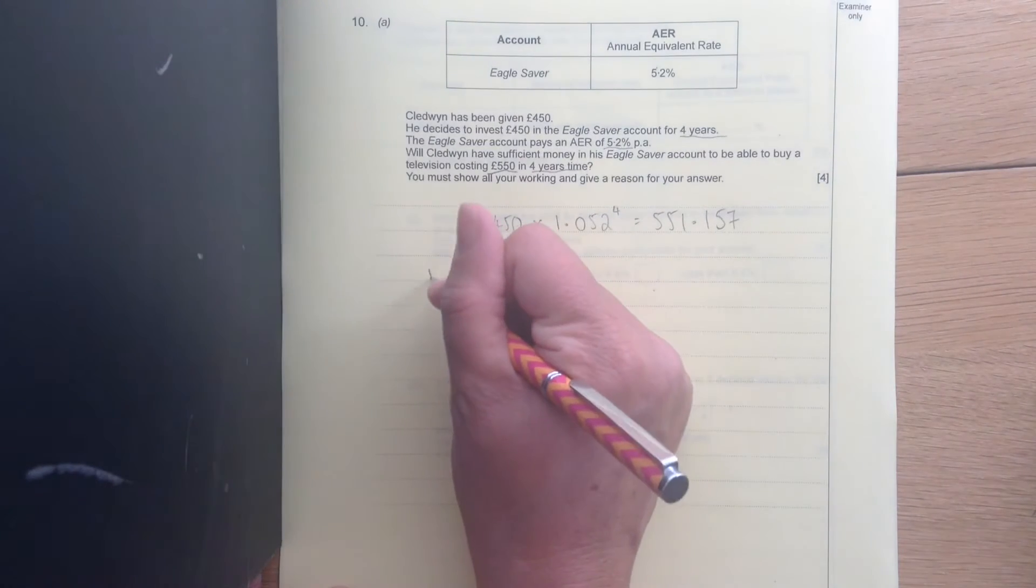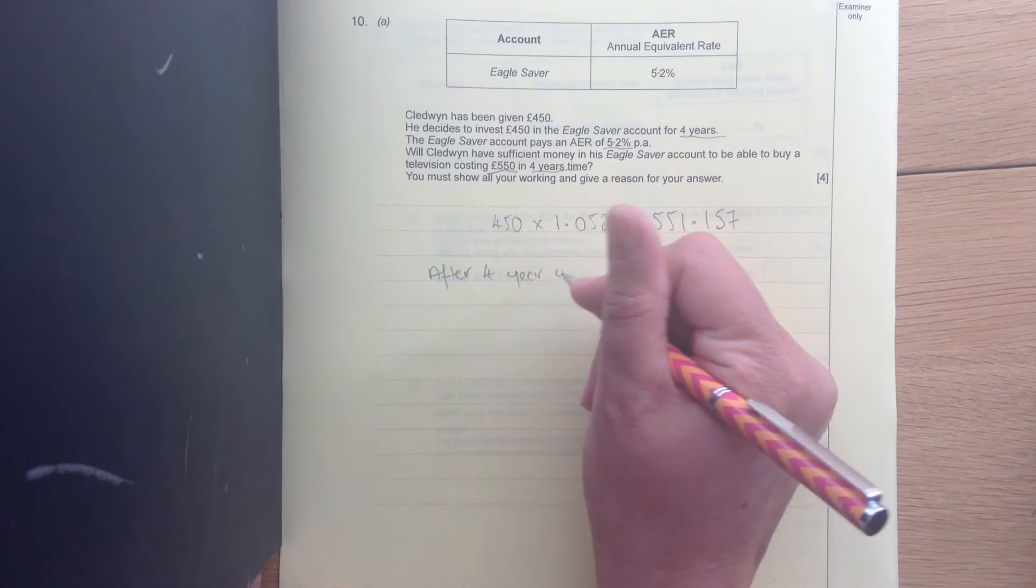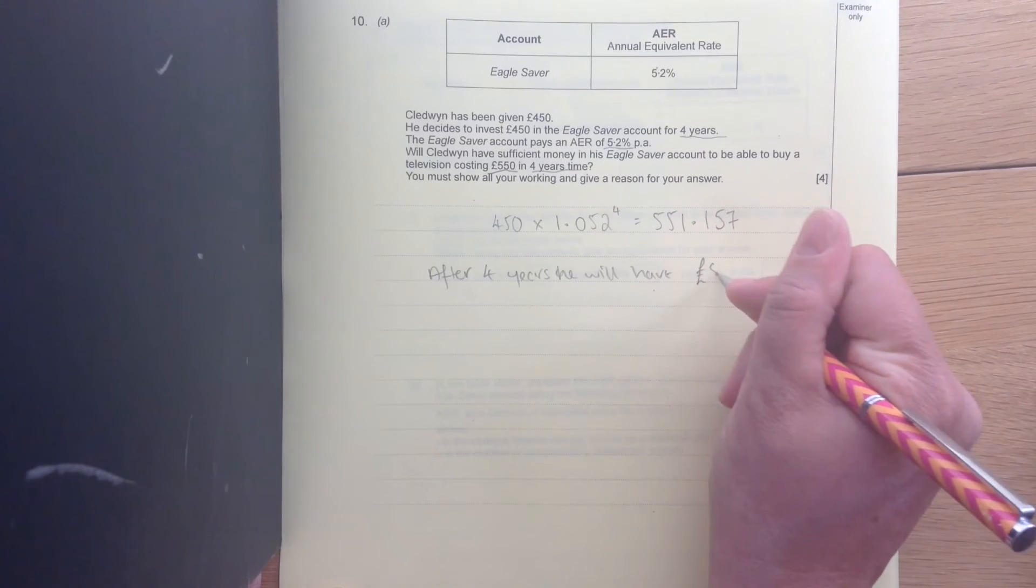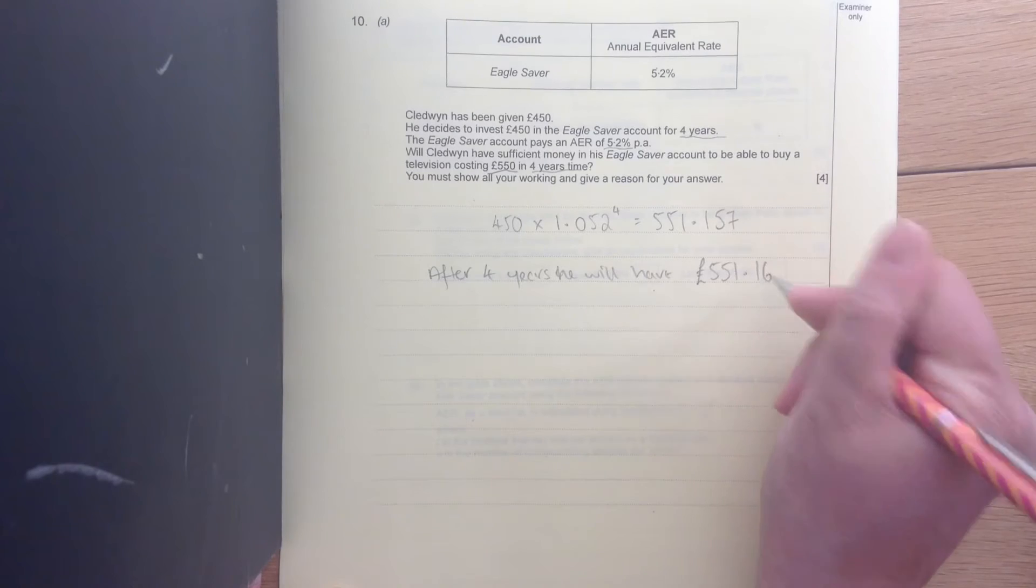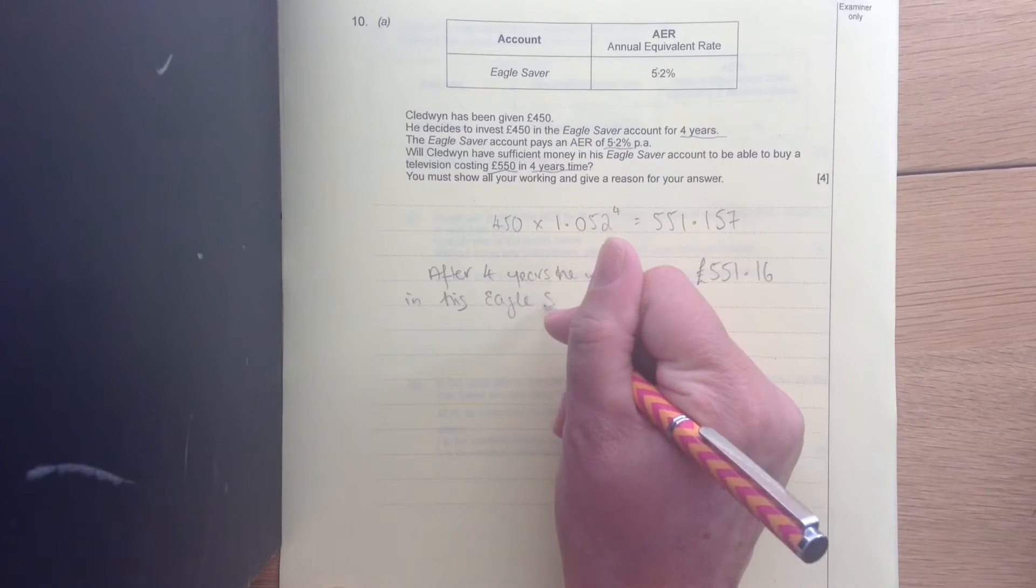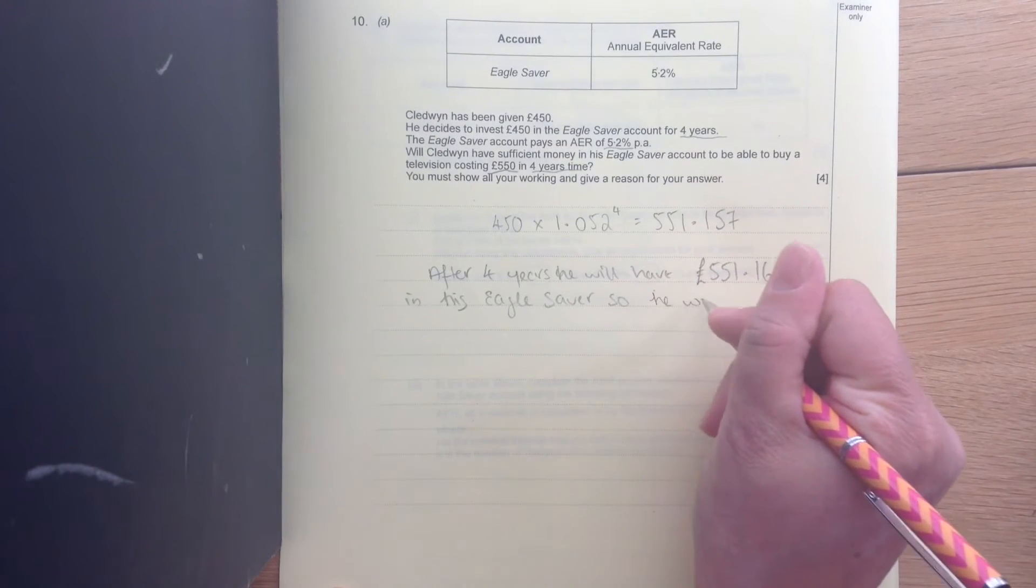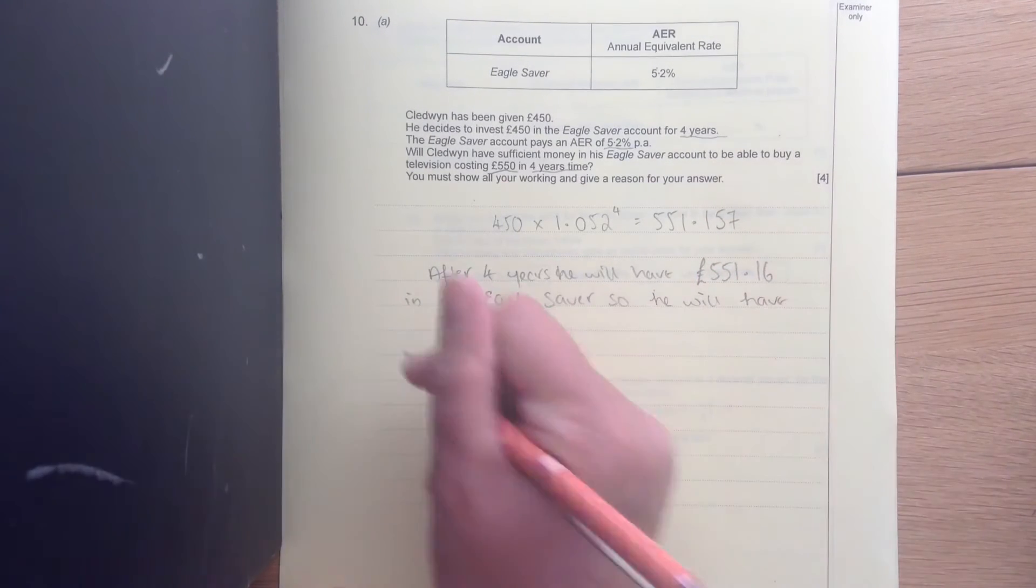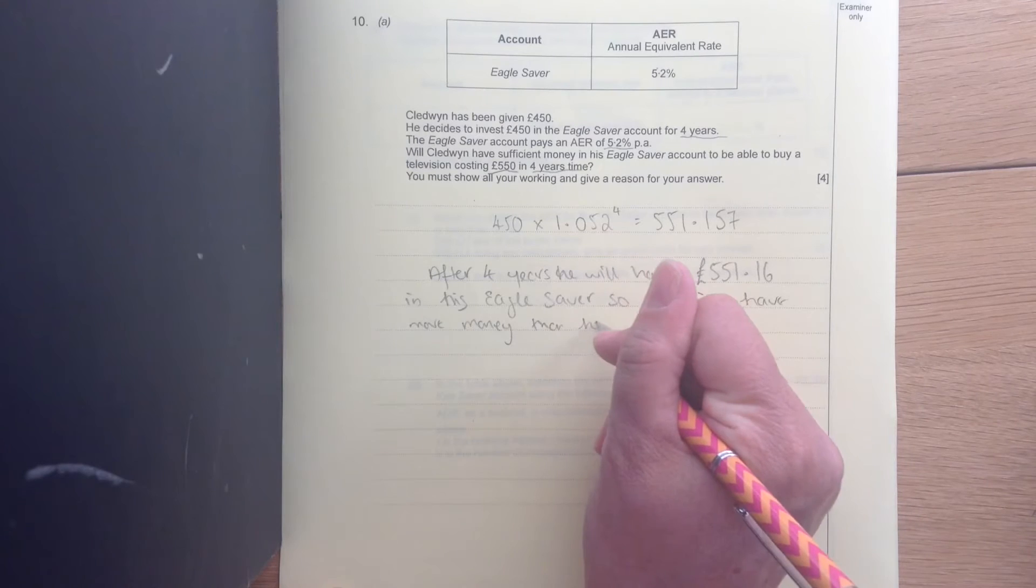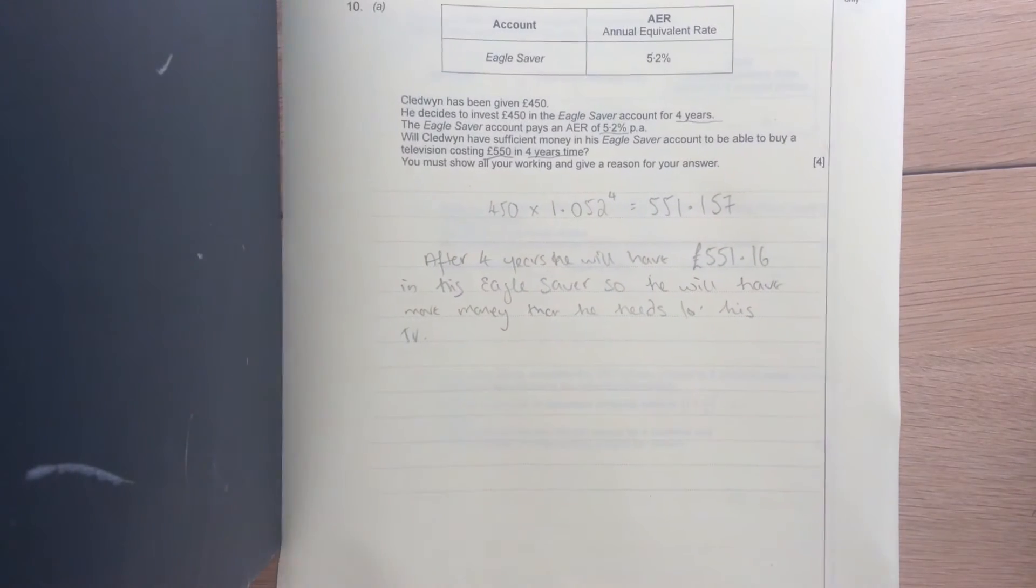he will have £551.16 in his Eagle Safer. So he will have more money than he needs for his TV. There we are, so he can buy it.